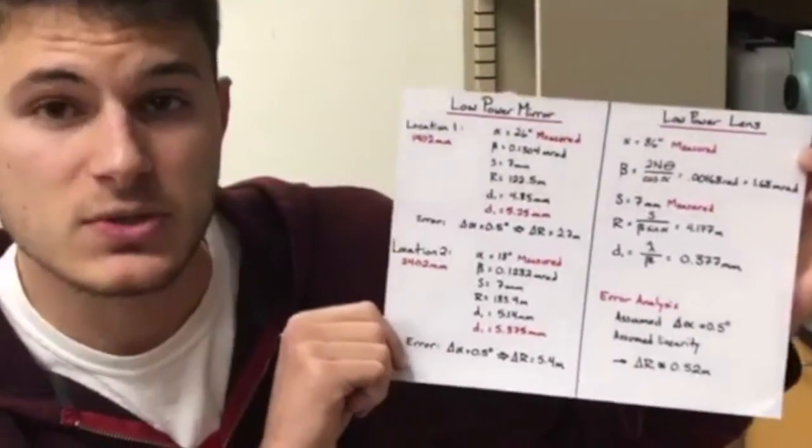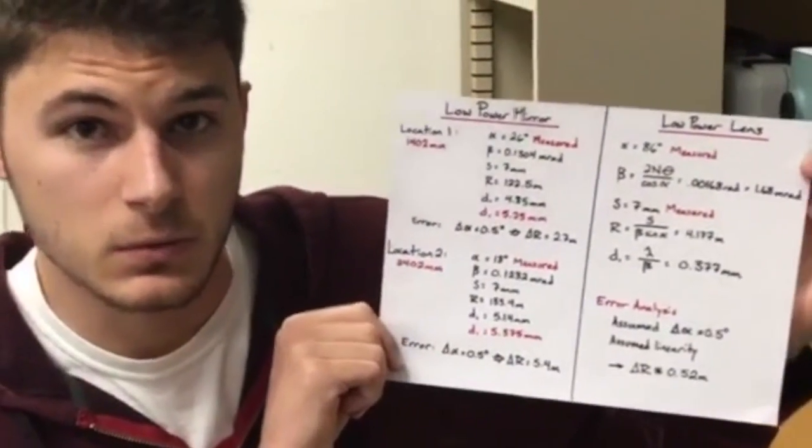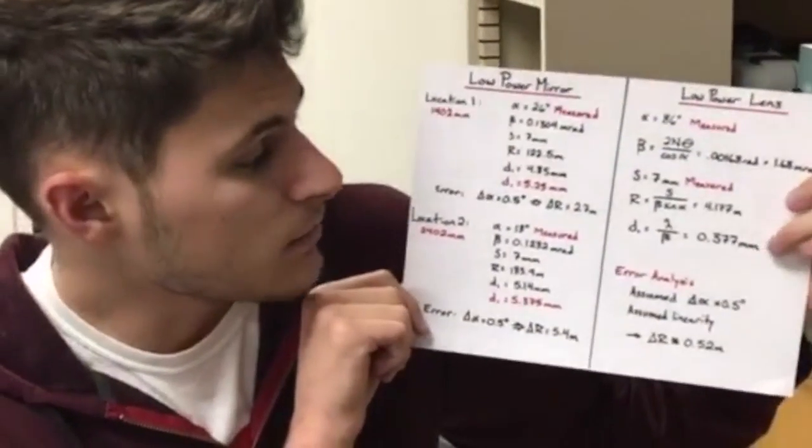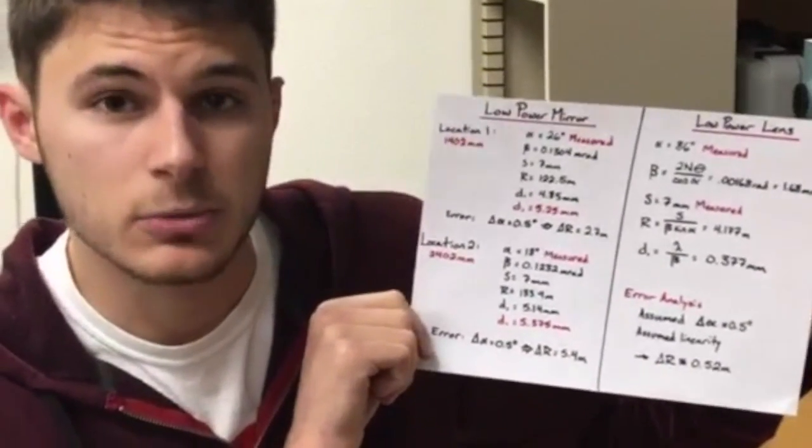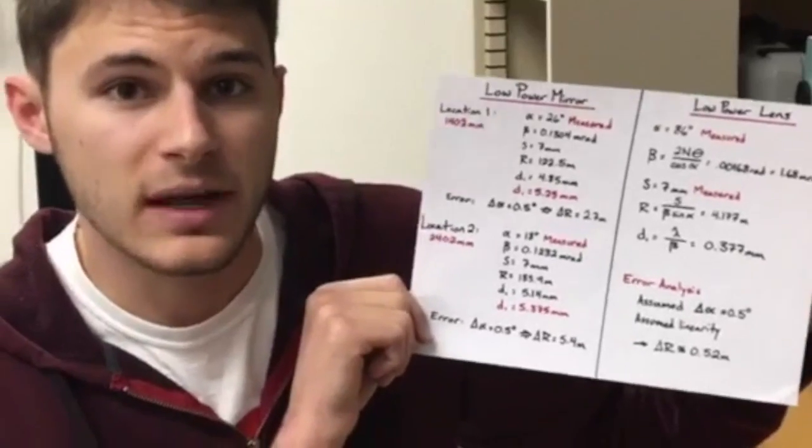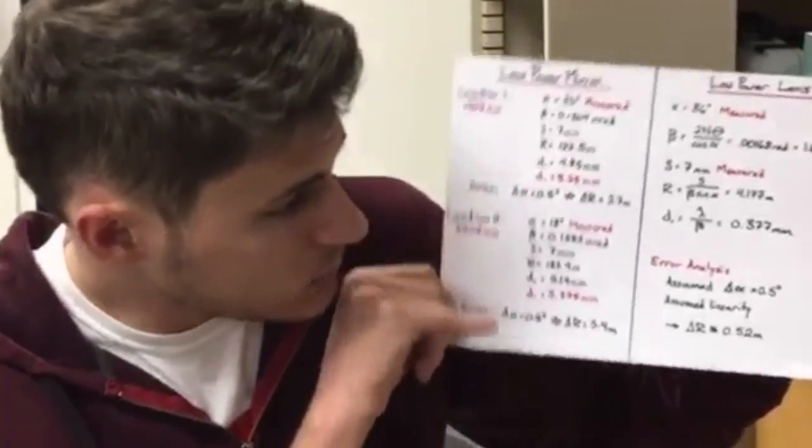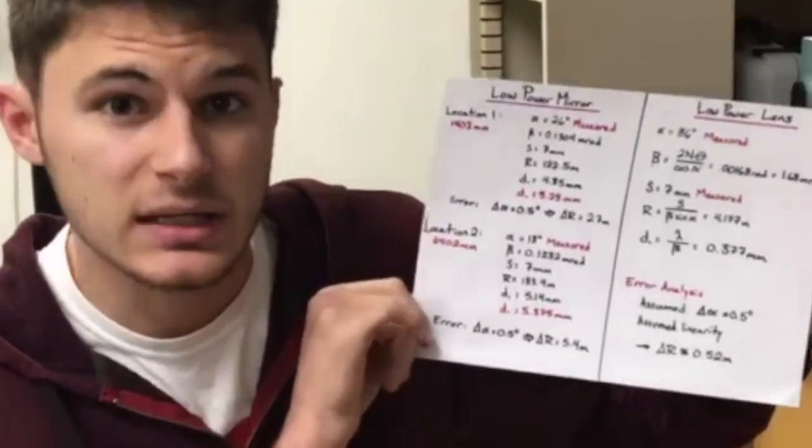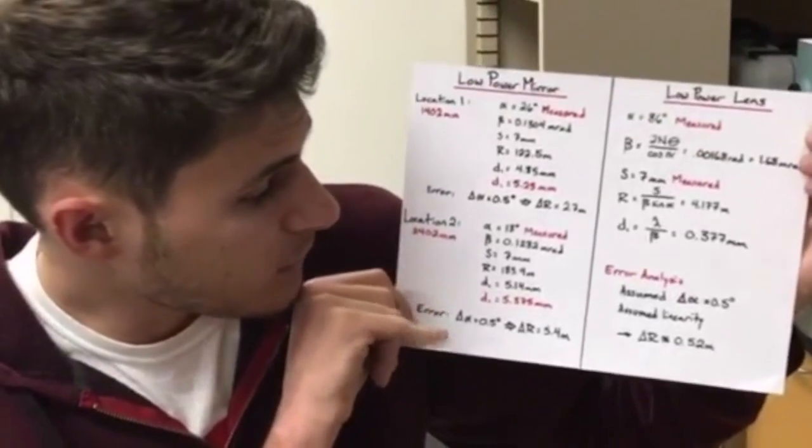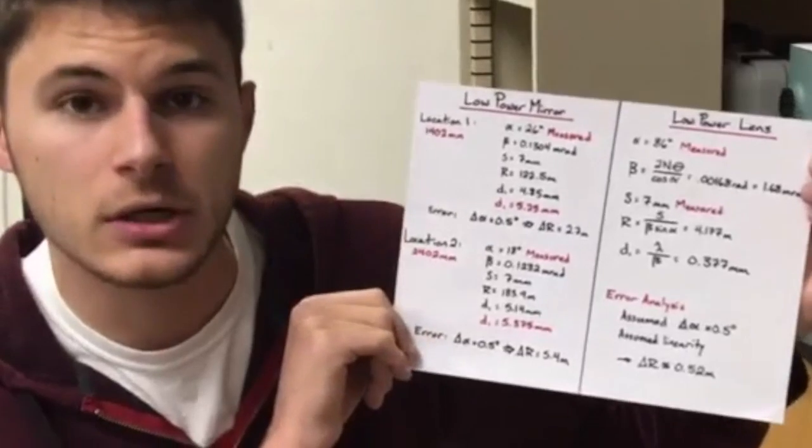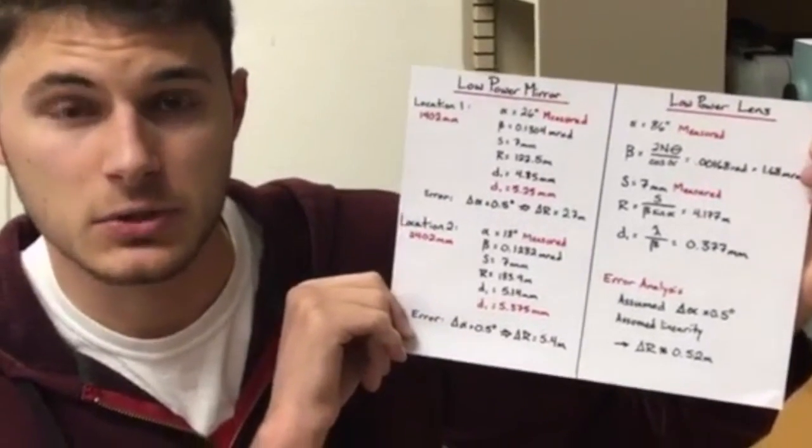We only have one measured and that was the calculated value. For the error analysis, we assumed a protractor angular error of about 0.5 degrees and, assuming linearity, we found a plus or minus 2.7, 5.4, and 0.52 meter change in radius of curvature for each section.